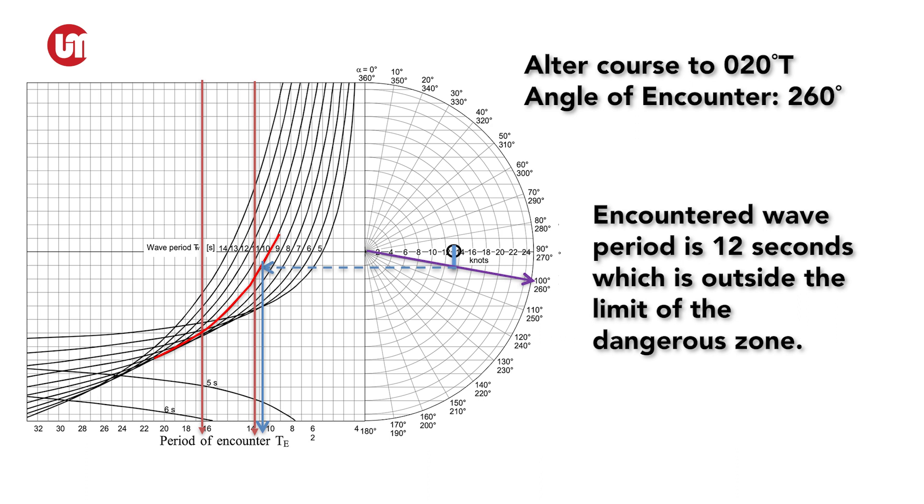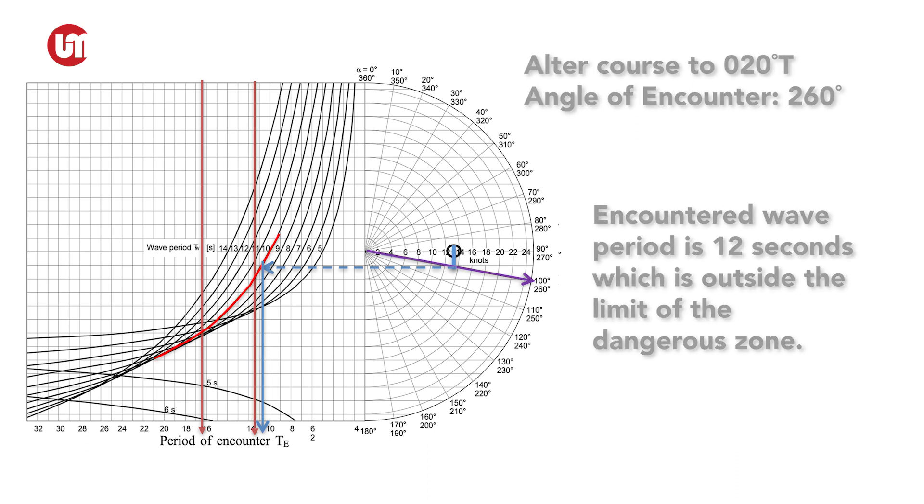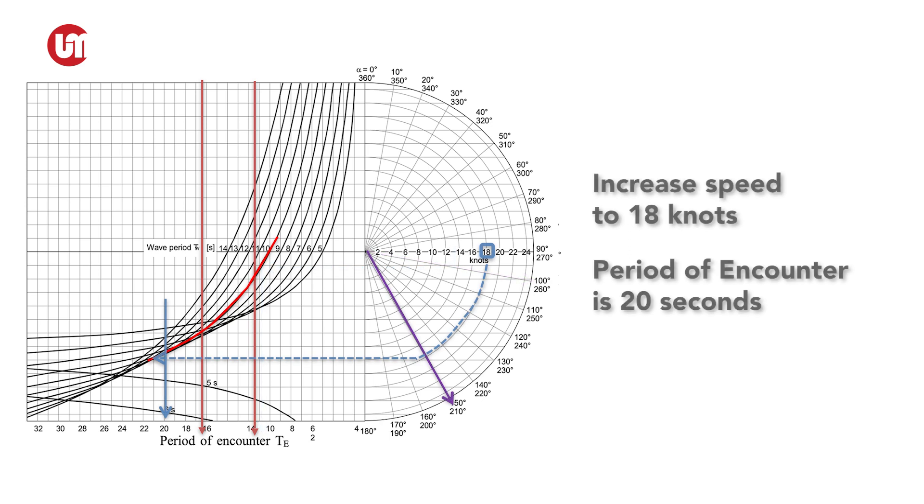Speed could theoretically be increased because if the limits are calculated, there are always two solutions. It's either stay below the lower limit or above the upper limit. For this example, if the speed is increased to 18 knots, the encountered wave period would be about 20 seconds. Therefore, the vessel is already out of the danger zone. But this should be checked if this is possible with the ship's maximum speed.